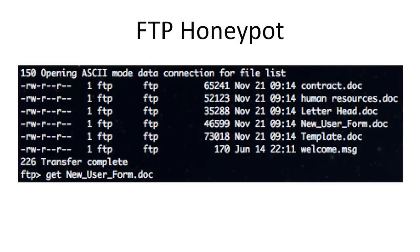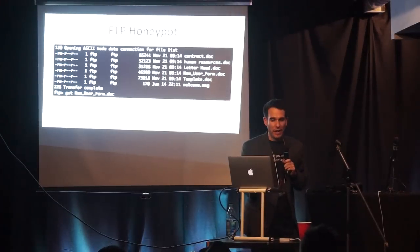Another use case: a honeypot. Create a system inside your company with an FTP server — enable anonymous access if you want, or even just use weak passwords — and seed it with a bunch of these documents. As soon as someone downloads and opens the document, you have that info: you know where they came from and what machine they used. Very simple to create and very effective.